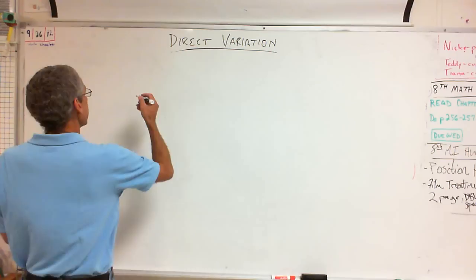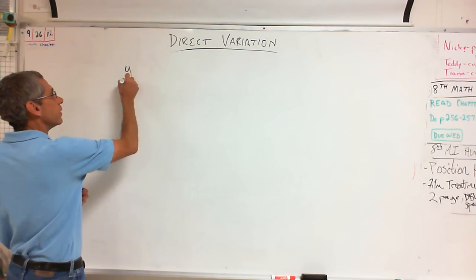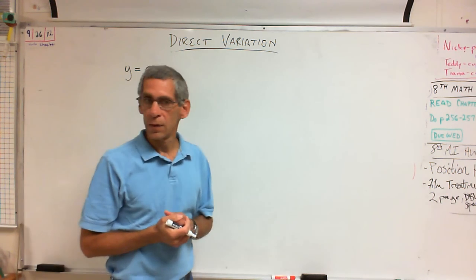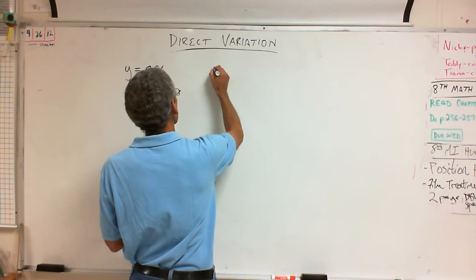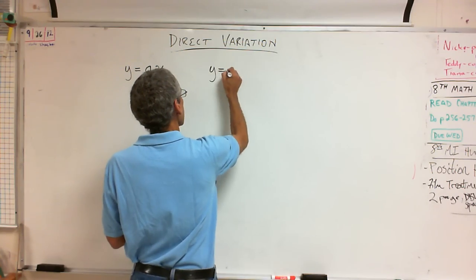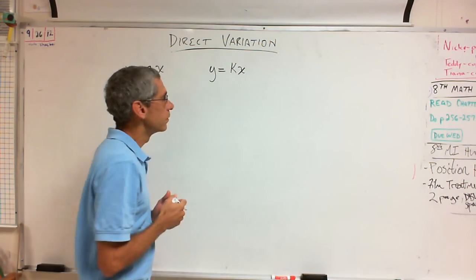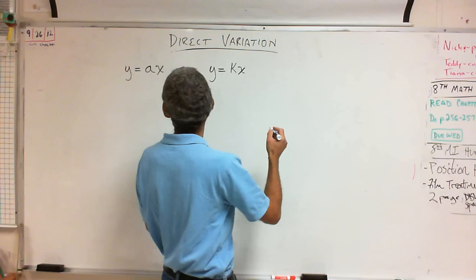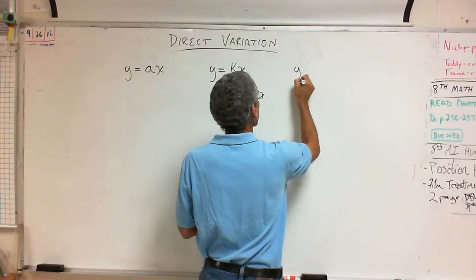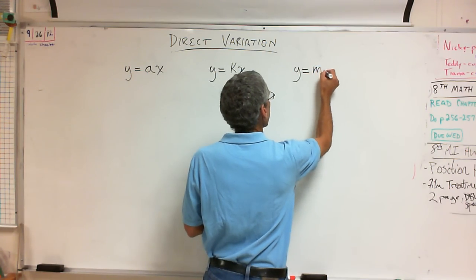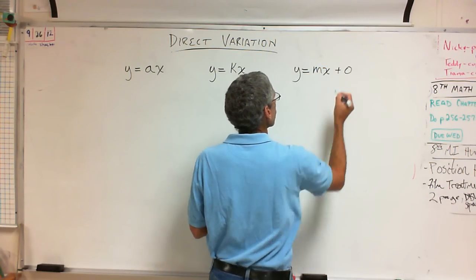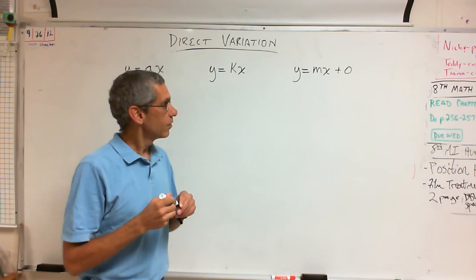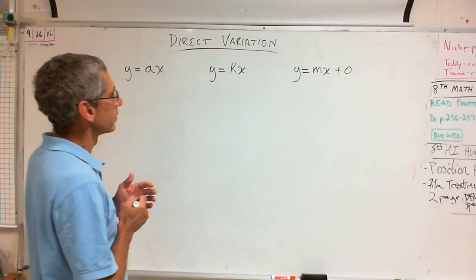In the book, they say direct variation is y equals ax. In other books, they say direct variation is y equals kx. And in Gary's math class, Gary's version is y equals mx plus zero. All of them are the same. They're basically all the same thing. What's different between them?